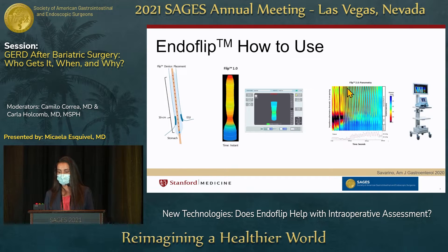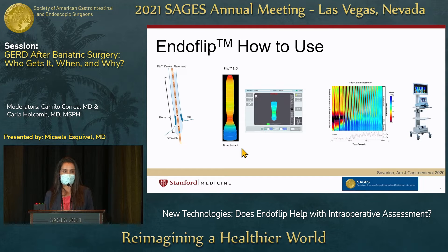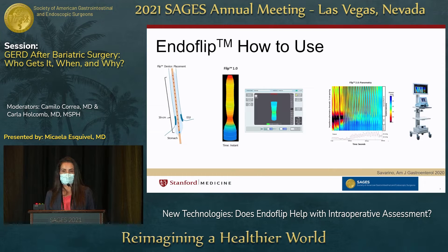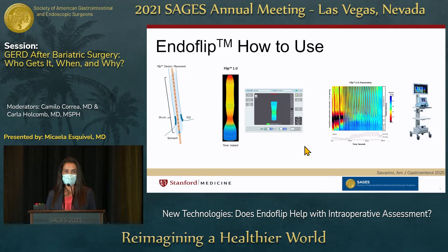Looking at the image on the left, you can see the catheter across the EG junction and the balloon inflated within the esophagus. Here in the center, we see a real-time image of what you would see on the actual device — a depiction of the screen where you can inflate and deflate the catheter, pause and save the image, and record measurements. On the right is Endoflip 2.0, a newer model where you can look at changes over time, which looks a lot like manometry.